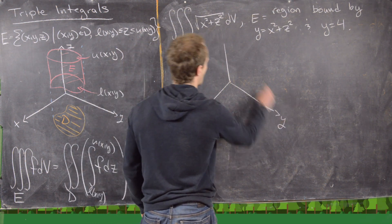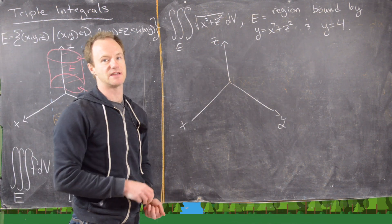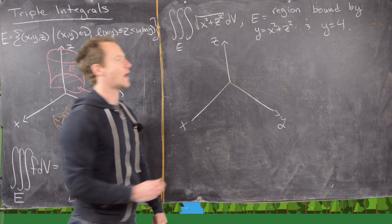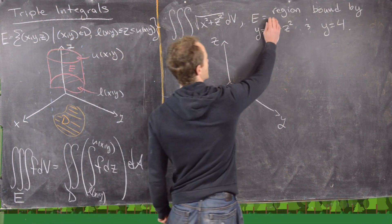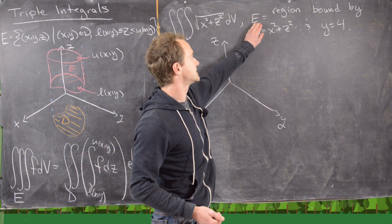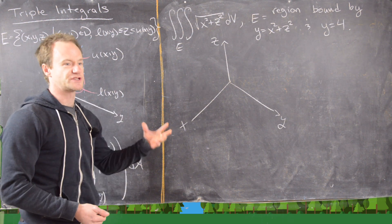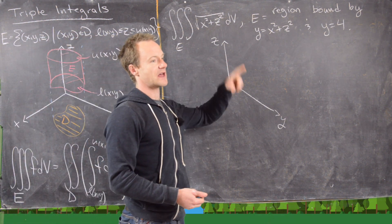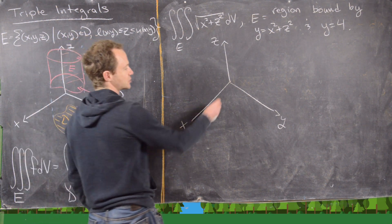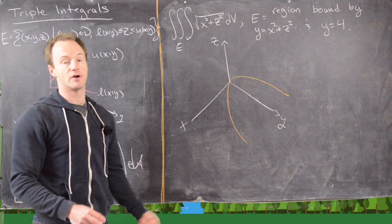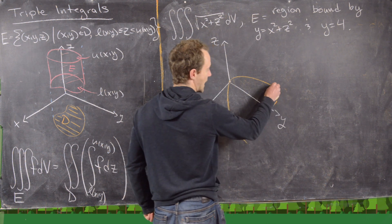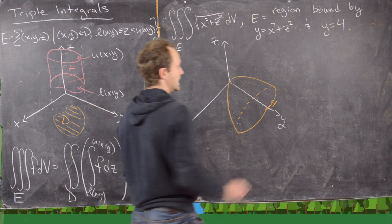Let's draw a picture with the X, Y, and Z axes. To understand the surface y = x² + z², cover up one variable at a time: covering Z gives y = x², a parabola; covering X gives y = z², also a parabola; setting Y equal to a constant gives x² + z² = constant, which is a circle. So this surface opens like a parabola in two directions with a circular cross-section. I'll draw this parabola coming out, stopping at y = 4, where it opens into a circle.